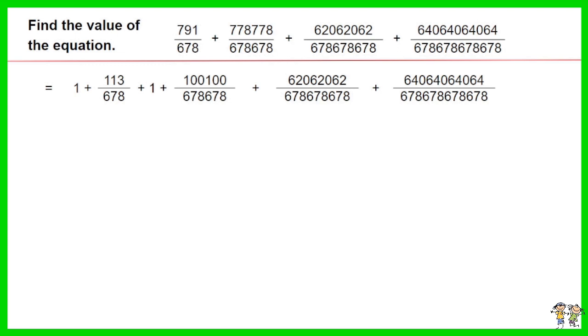791 over 678 equals 1 plus 113 over 678. 778778 over 678678 equals 1 plus 100100 over 678678.